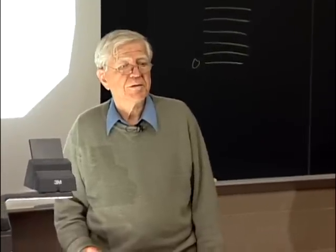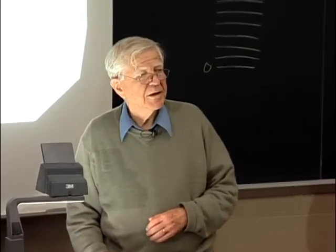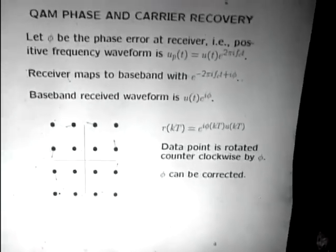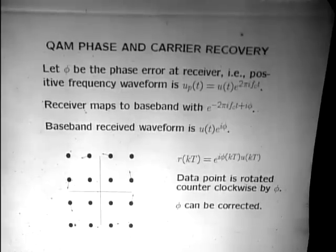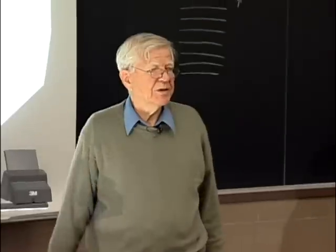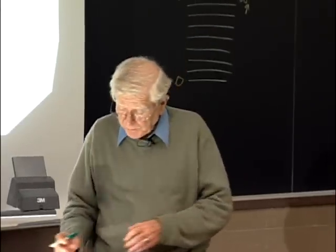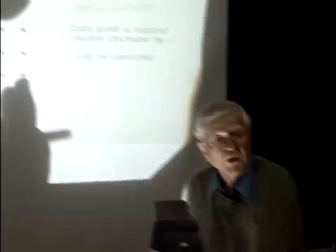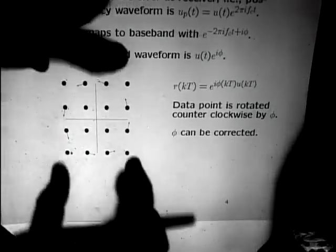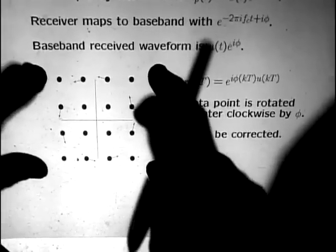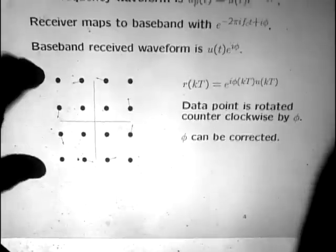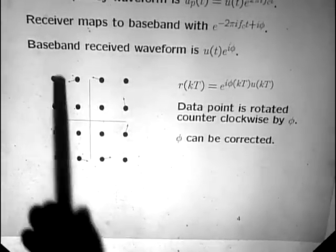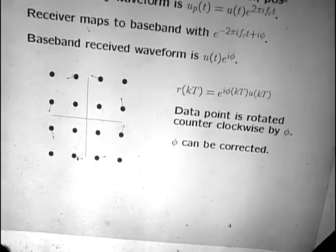What's the problem with this? Suppose there's a huge error where for a long period of time things get very noisy. If you can't decode the data for a long period, the phase errors build up. When the channel stops being noisy, your phase could be off by π/2. What you should be seeing is one constellation diagram, but what you're actually seeing is that diagram rotated by π/2. You can't tell the difference—you decode every symbol wrong because you're making a π/2 error in every one.